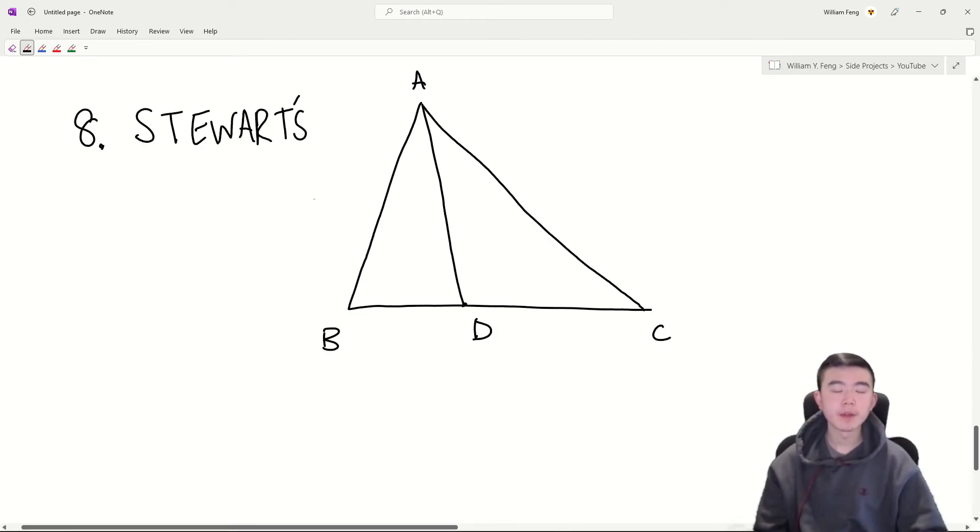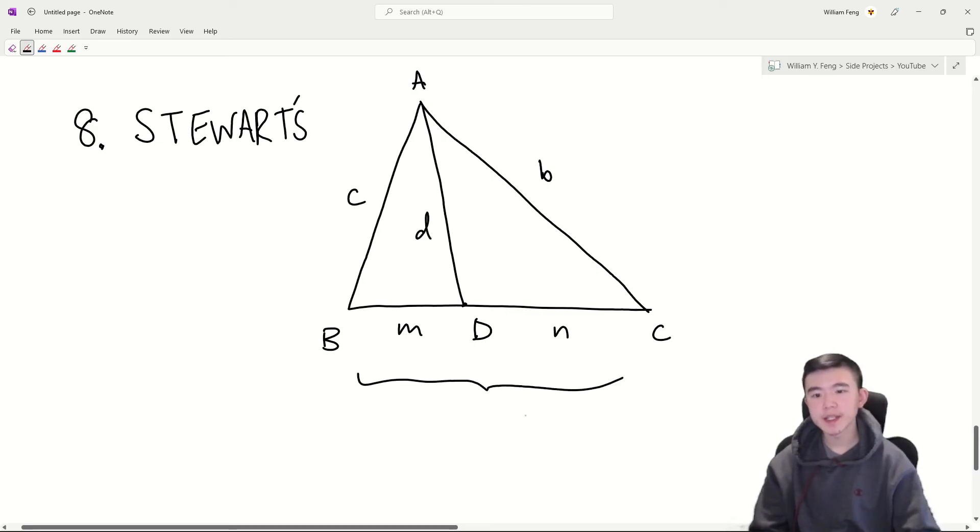And now we have Stewart's theorem, which tells us the length of a cevian in a triangle. Suppose we have a triangle ABC with point D on segment BC. Let AC equals B, AB equals C, BD equals M, CD equals N, AD equals D, and BC equals A. Then there's a quite nice way to remember Stewart's theorem, which is a man and his dad put a bomb in the sink.